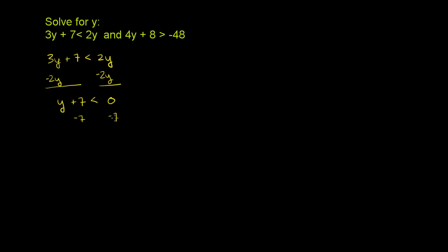And then we can get rid of this 7 here by subtracting 7 from both sides. Left-hand side, y plus 7 minus 7 — those cancel out — we just have a y, which is less than 0 minus 7, which is negative 7. So that's one of the constraints.